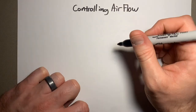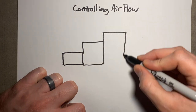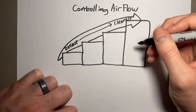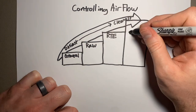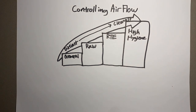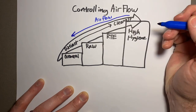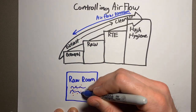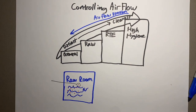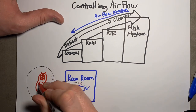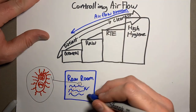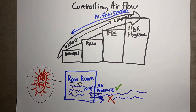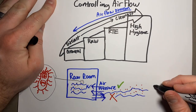Concept three: where is the airflow going? We already talked about things going from dirtiest to cleanest — general manufacturing, raw, ready-to-eat, then high hygiene. Well, your airflow should go the exact opposite direction: from clean all the way to dirtiest. Because if your raw room air could have pathogens in it, you don't want that going outside of that room. You want air pressure going into the room, not out — because eventually that could contaminate your finished product.